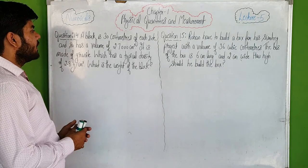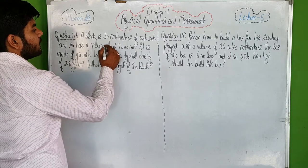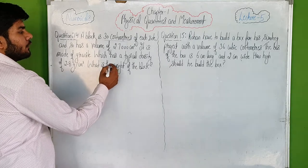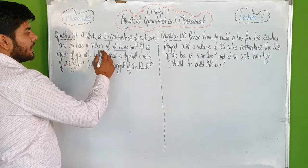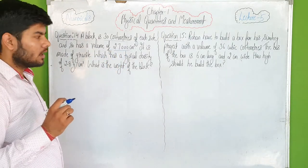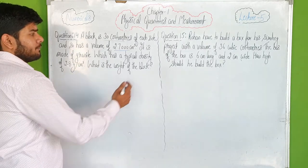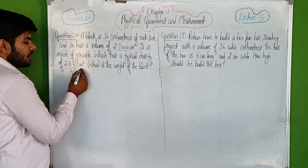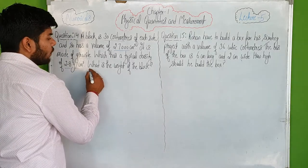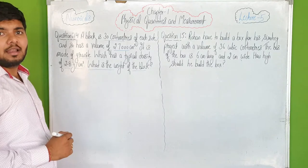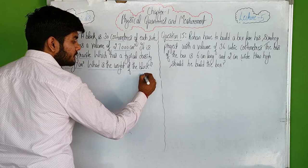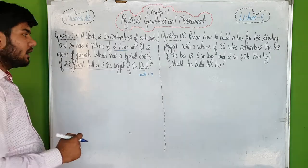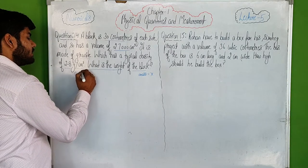Numerical 14: a block has each side of 30 centimeters, a volume of 27,000 centimeter cube, and is made of granite with a density of 2.8 grams per centimeter cube. We need to find the weight of the block. Note: here we need weight, not mass — they are different quantities.